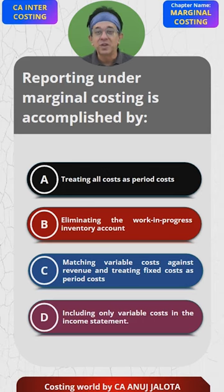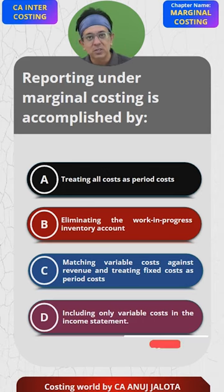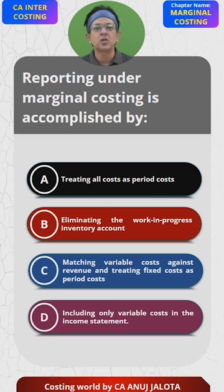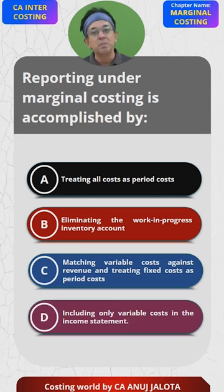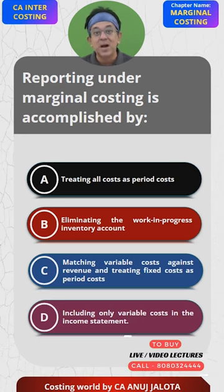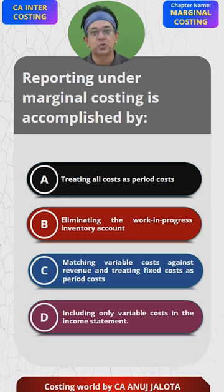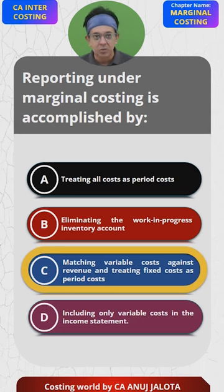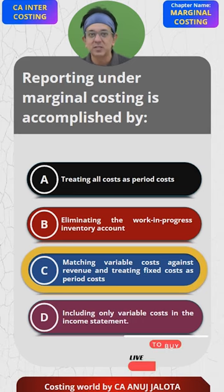Variable costs are per unit costs that are charged against your sales. Fixed costs are period costs that in any case are going to be there for a certain period. That is mentioned in part C of the question. So C is the correct answer — matching variable cost against the revenue, which gives you the concept of contribution, and treating the fixed cost as a period cost.